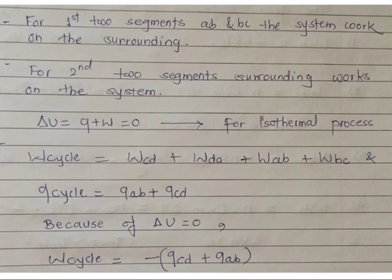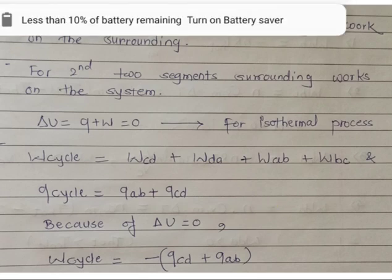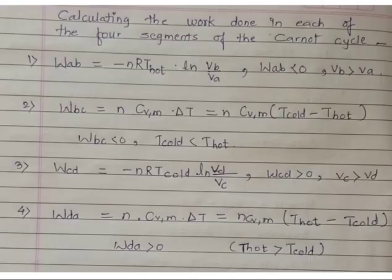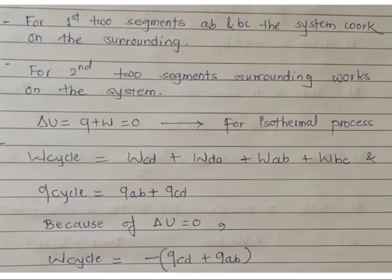To calculate the heat of the cycle: for BC and DA, heat is constant because of adiabatic processes, so Q-cycle equals Q_AB plus Q_CD. Because the change in internal energy is zero, W-cycle equals negative (Q_CD plus Q_AB). When delta U equals zero, Q equals negative W, so W equals negative Q.